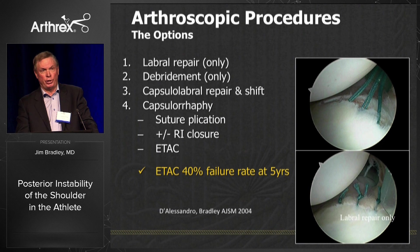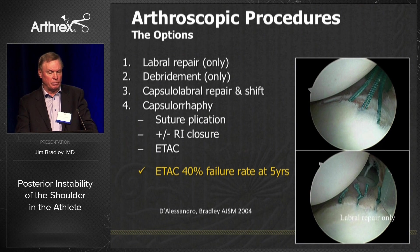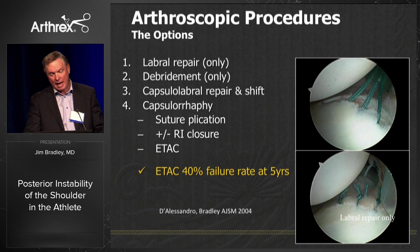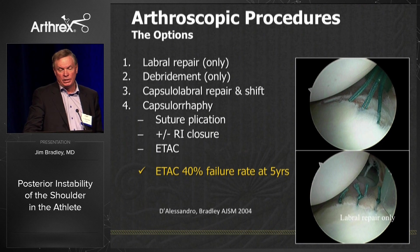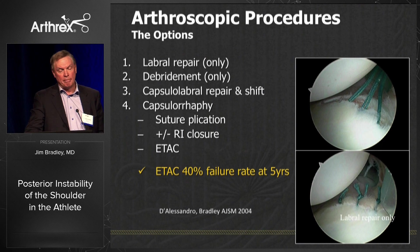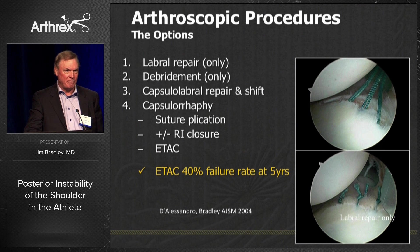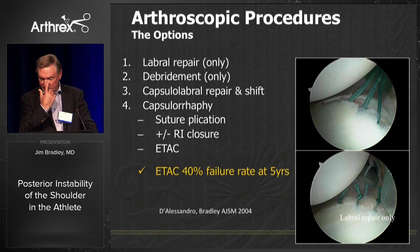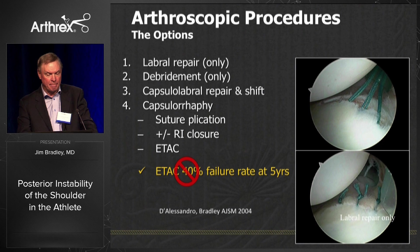Using knotless fixation definitely improves OR time. Your options are: labral repair only in throwers, debridement in some throwers with a flap tear, capsule-labral repair and shift, or capsulorrhaphy. I'm not a big fan of rotator interval closures. The electrothermals you want to stay away from — Don D'Alessandro and I presented our article with 100% follow-up of 84 patients, and in five years we had a 40% failure rate. Stay away from that.